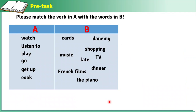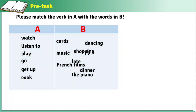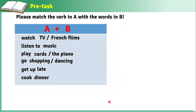Now let's do a pretest altogether before going to read the text. I want you to combine the word in column A with the word in column B. For example, 'watch' — watch TV or watch friends' films. How about 'listen to'? Listen to new music. Play — play card, or we can say play the piano.